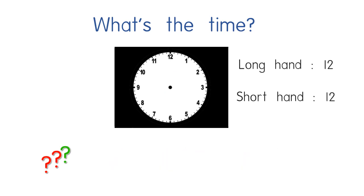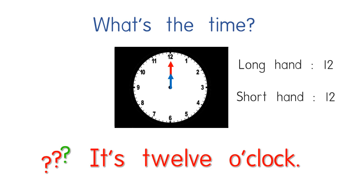One more example. What if I put the long hand at number 12 and the short hand is also at number 12? Can you tell me what's the time? Both hands are at number 12. So the time is — yes, it's 12 o'clock.